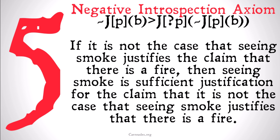So, if it is not the case that seeing smoke justifies the claim that there is fire, then seeing smoke is sufficient justification for the claim that it is not the case that seeing smoke justifies that there is fire. It's a little confusing, but hopefully that example gives you a bit of a sense of what this axiom means.